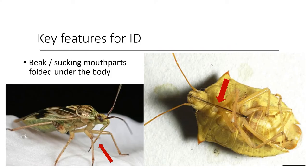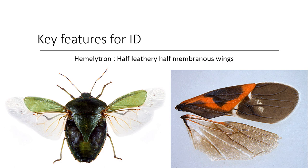Key features for ID: one thing you won't forget is the sucking mouthpart — they are long and look like needles. Sometimes in the field you might not see the mouthparts extended because some families hide them in a little groove in their body. No other order has the hemelytron. Beetles have an elytra which covers wings entirely, but Hemiptera have a hemelytron which covers only half of the wings.